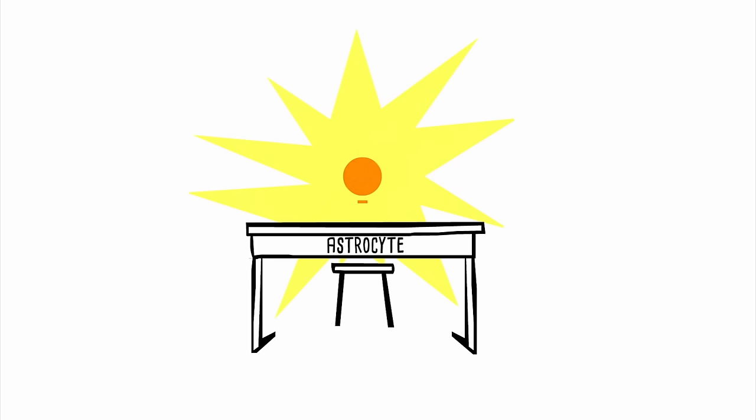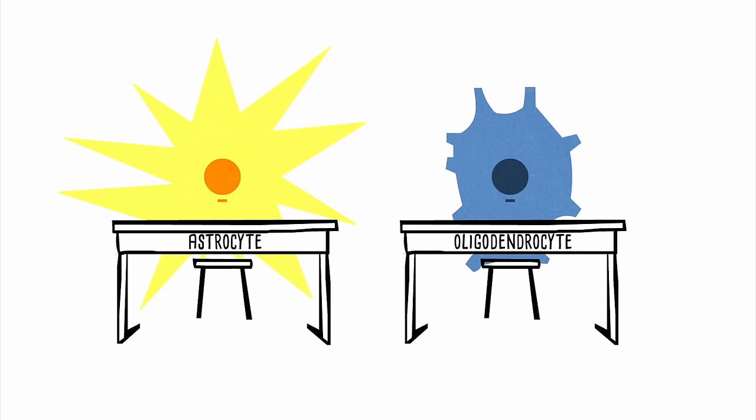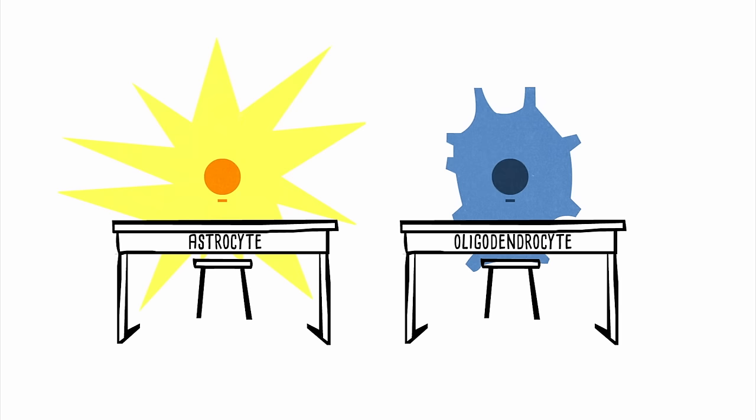They've also discovered that we might be able to teach other kinds of brain cells, such as astrocytes or oligodendrocytes, to behave like neural stem cells and start generating neurons too.